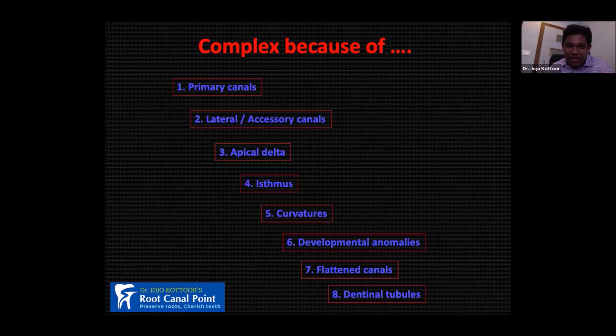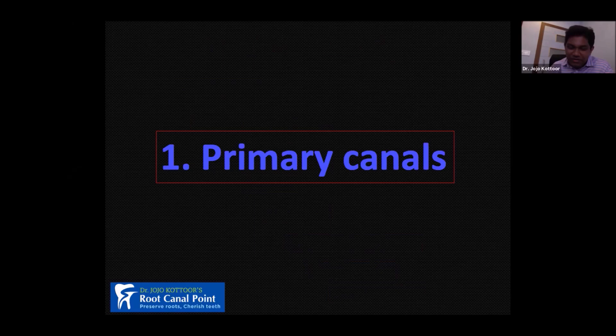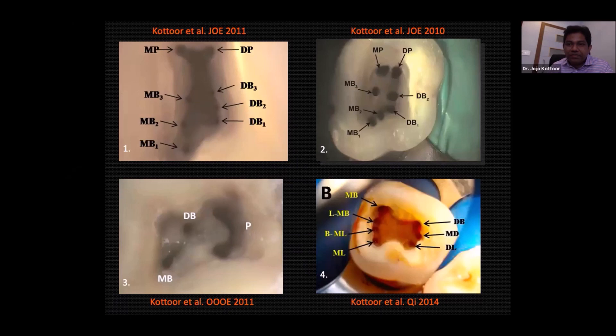Let's discuss each of these eight factors briefly. These are my own cases — all eight canals, seven canals, C-shaped canals — obturating all the primary canals, as you can see in this picture. If you look at this lateral incisor with a four root canal system, all are primary root canals, well obturated. Both the seven-canal case and the lateral incisor case were published as cover images in the Journal of Endodontics and the International Endodontic Journal.